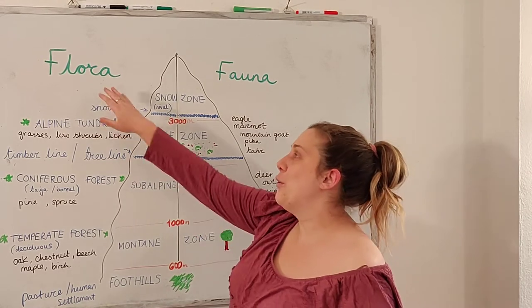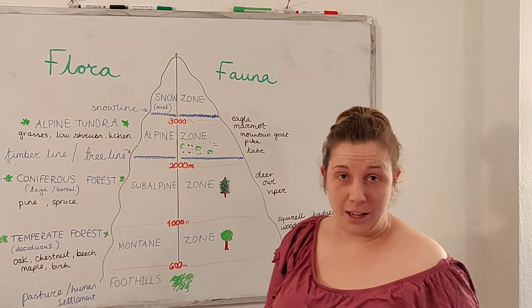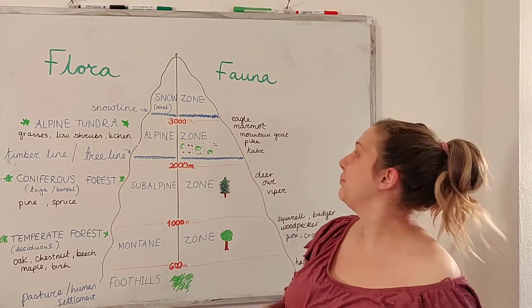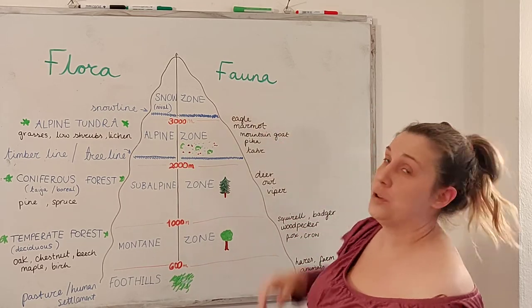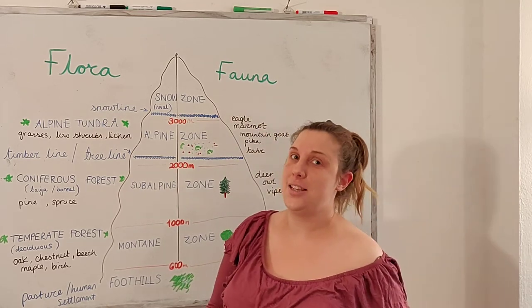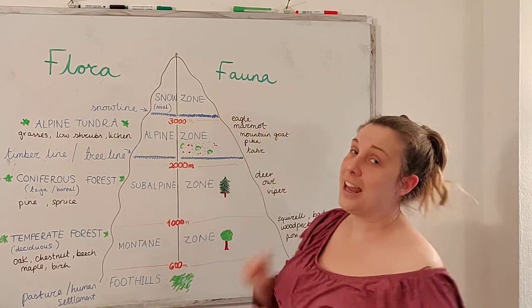So flora is the plant life that we can find on a mountain and the fauna is the animal life — plants and animals.